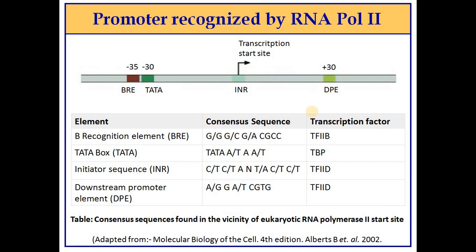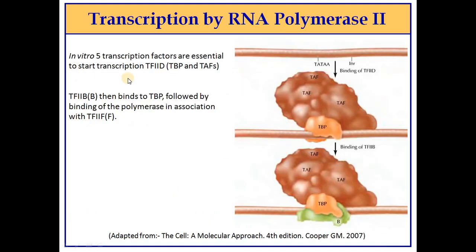These promoter elements may or may not all be present together in one DNA — it is not necessary that all promoter elements are present together. The transcription factors that bind to these elements are: TF2B for BRE, TBP for the TATA box, TF2D for the initiator sequence, and TF2B again for the downstream promoter element.